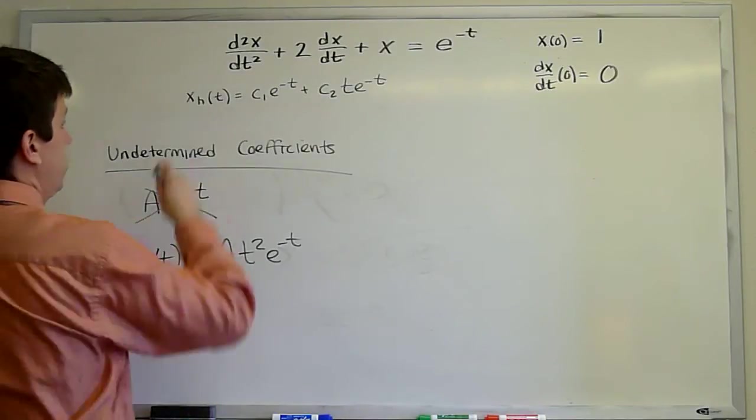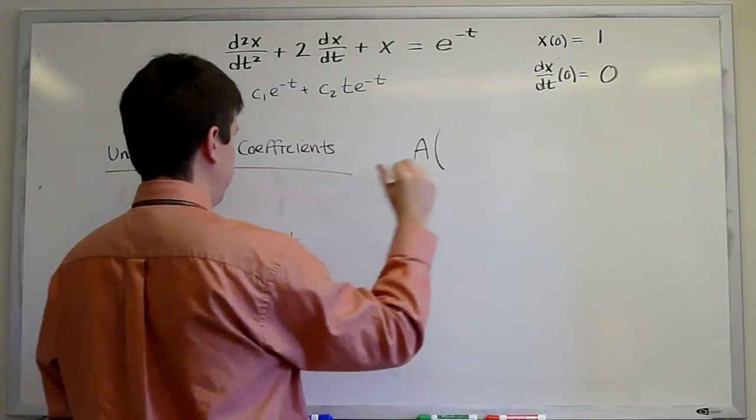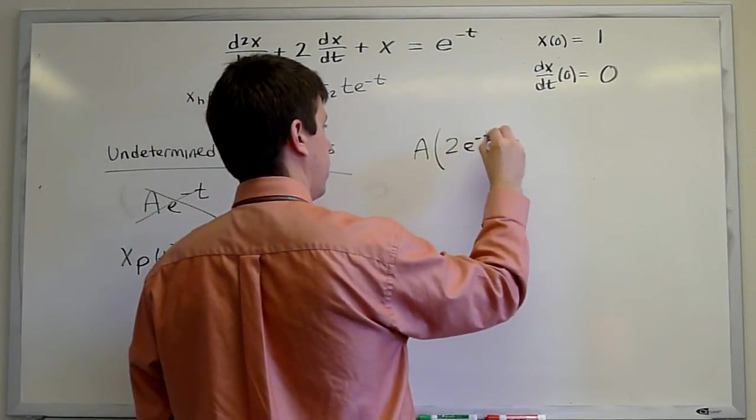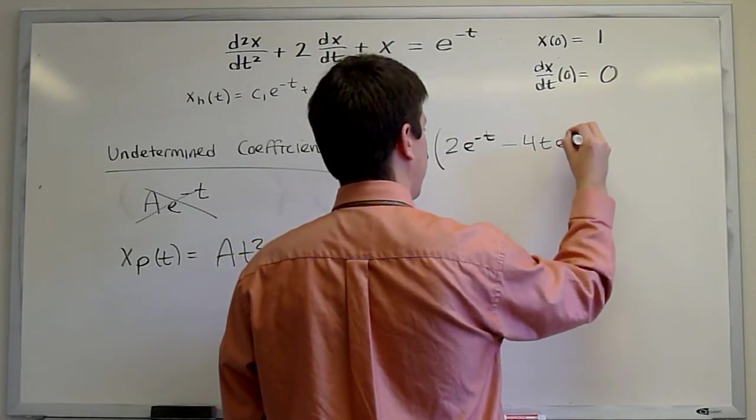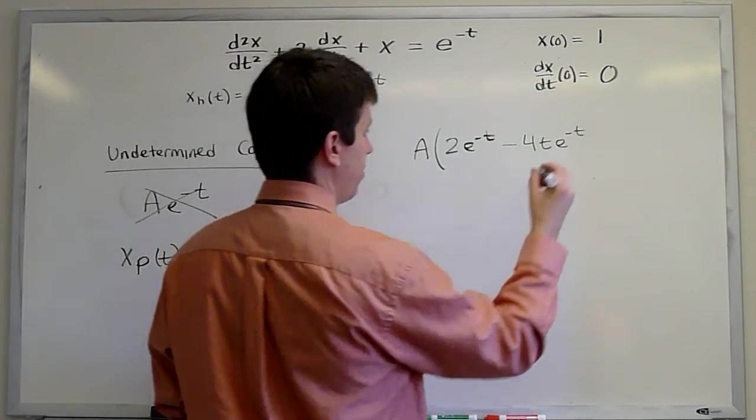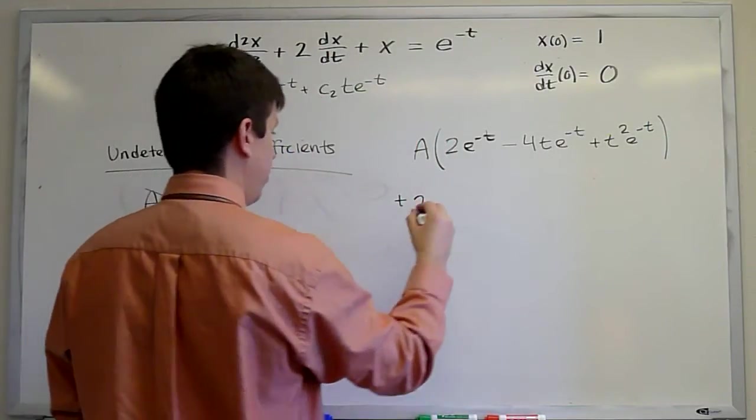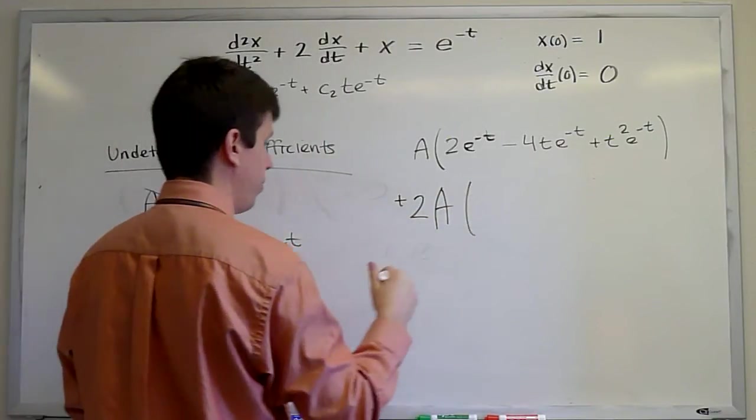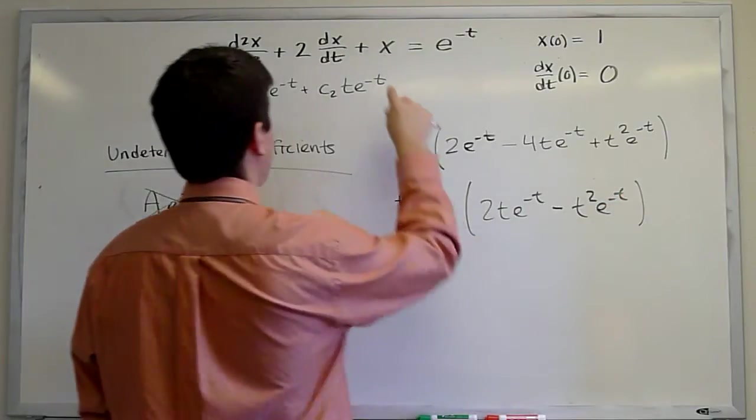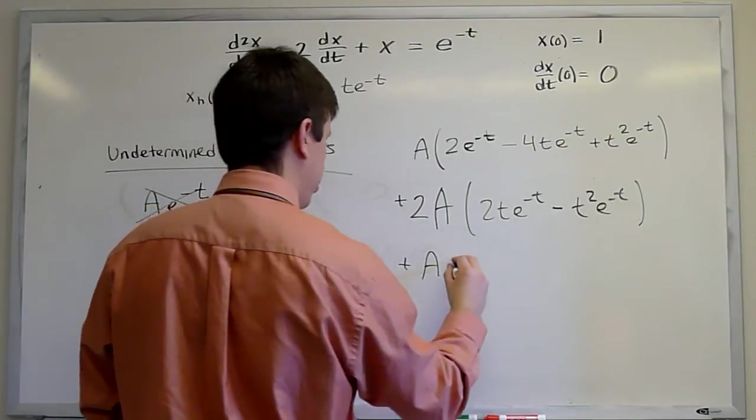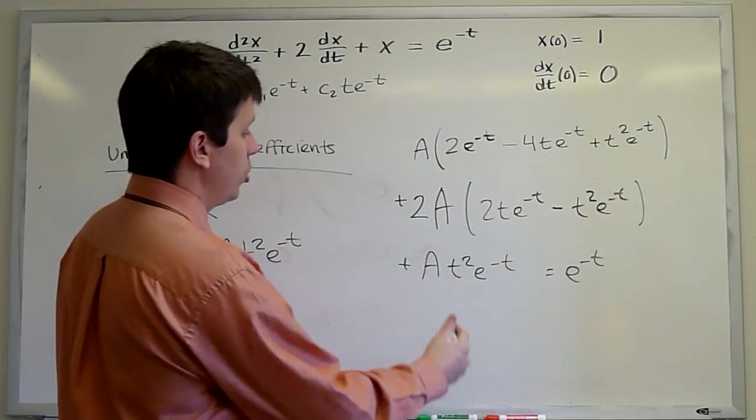If we now plug this in to the differential equation, we'll get two derivatives of t squared times e to the minus t plus twice the derivative of this times the derivative of that, which will give us minus 4t e to the minus t plus t squared times two derivatives of e to the minus t. That will give us t squared e to the minus t. Then we have two times our first derivative. The first derivative of that will be 2t e to the minus t minus t squared e to the minus t plus x. And our guess for the particular solution is a t squared e to the minus t. Must equal our forcing on the right hand side e to the minus t.